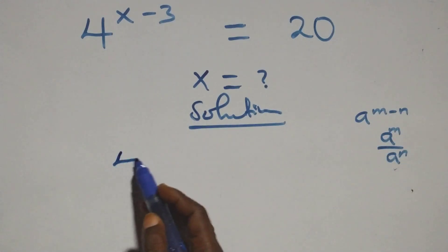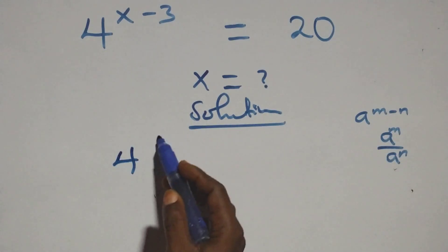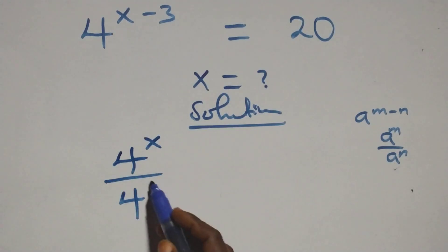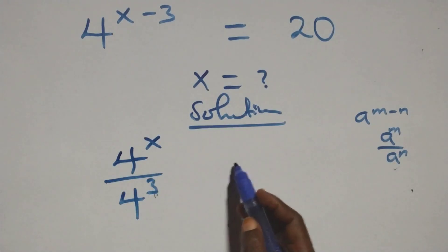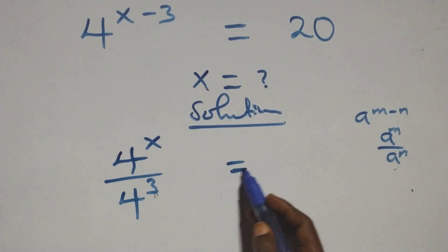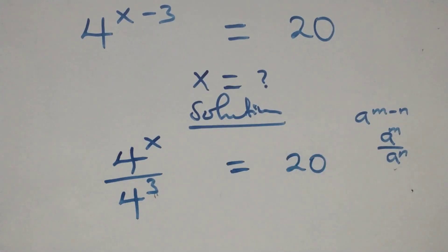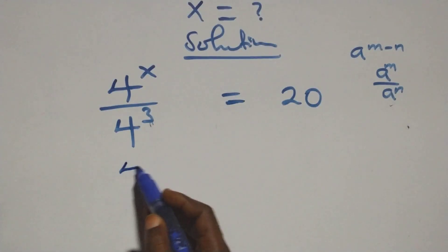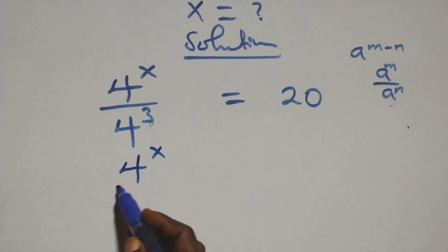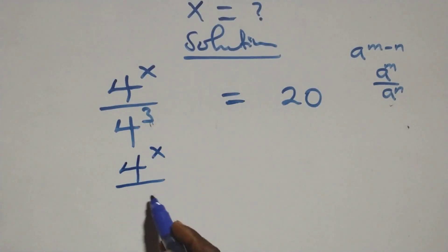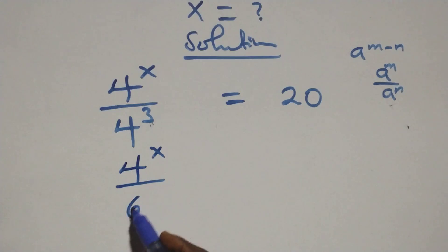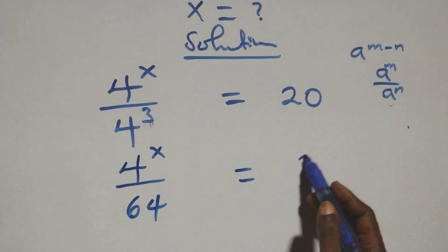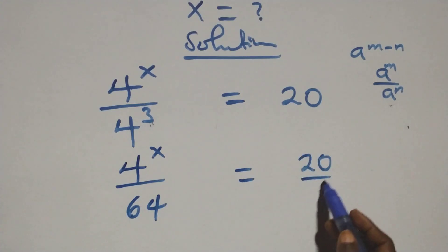At this here, we have 4 raised to power x over 4 raised to power 3 equals 20 on this side. This is the same thing as 4 raised to power x over 4 raised to power 3, which is 4 raised to power x over 64 equals 20 over 1.